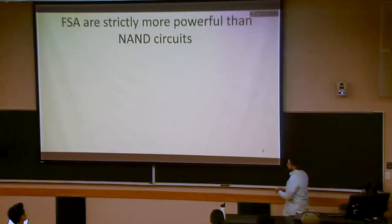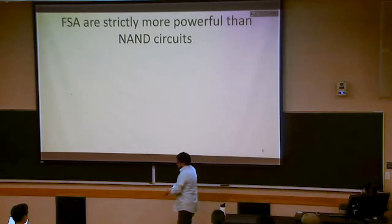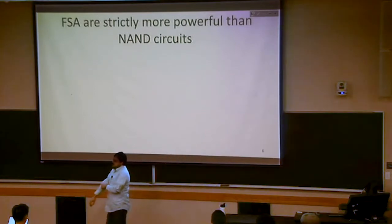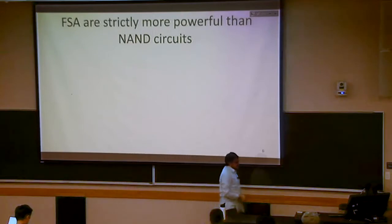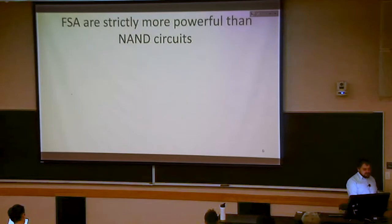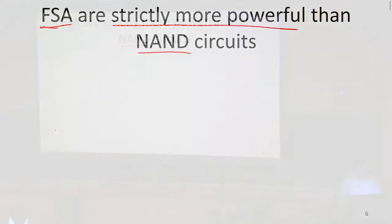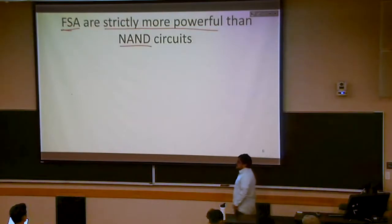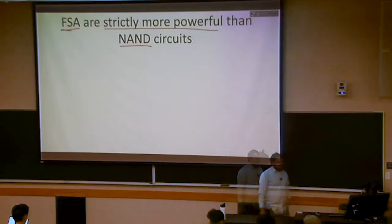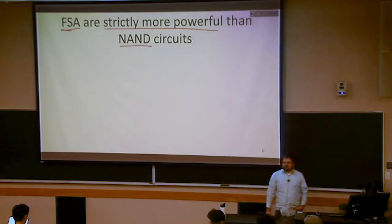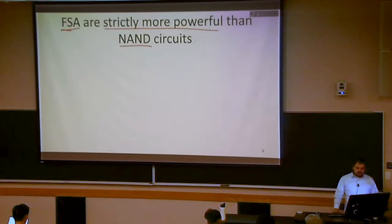We introduced finite state automata last time and mentioned that they can do infinite languages whereas Boolean circuits could not. What we're going to show today is that not only can finite state automata do some things that NAND circuits can't, we're going to show that finite state automata can do everything NAND circuits can and more — making FSA a strictly more powerful model of computing.